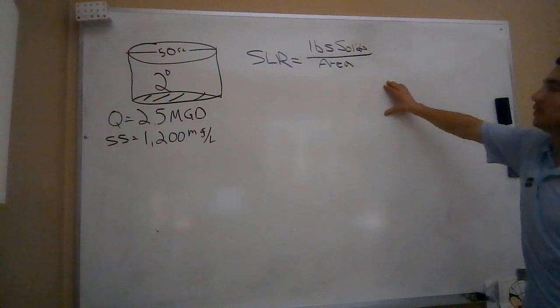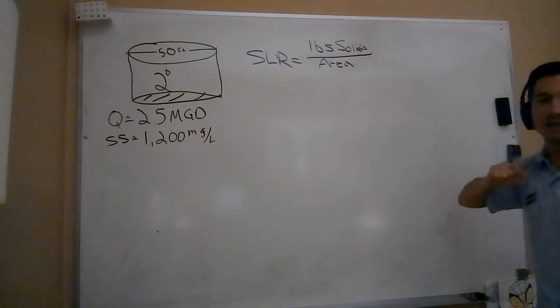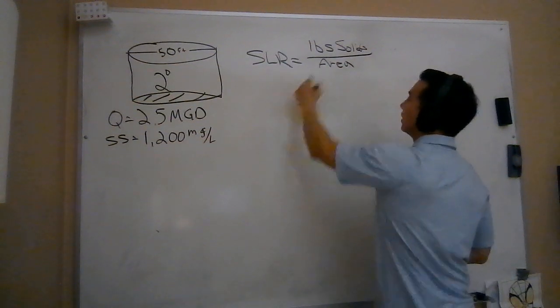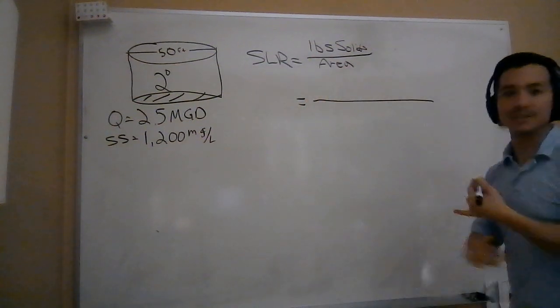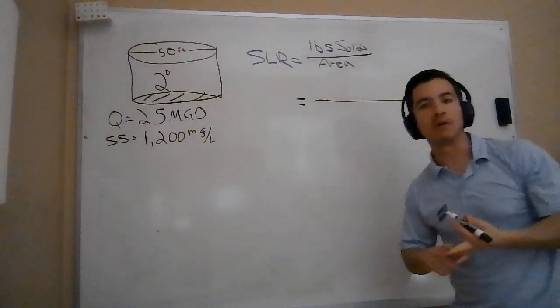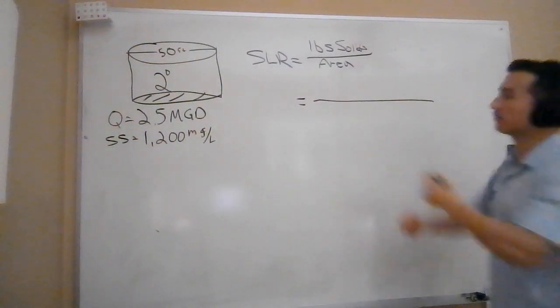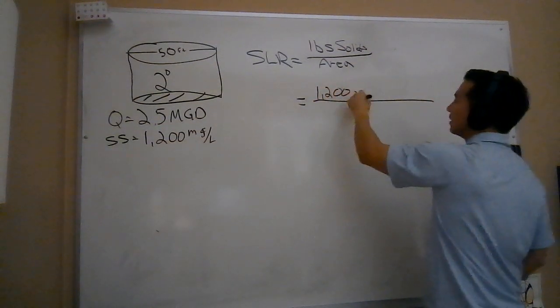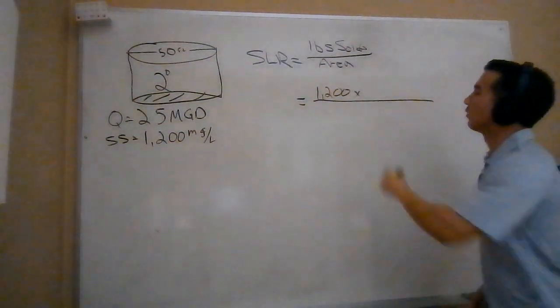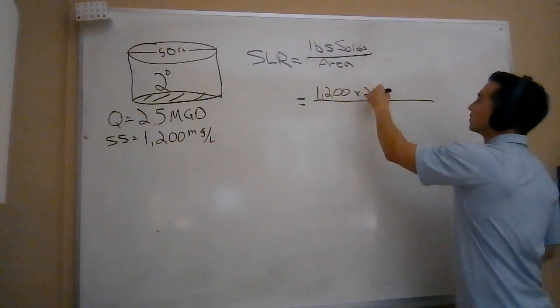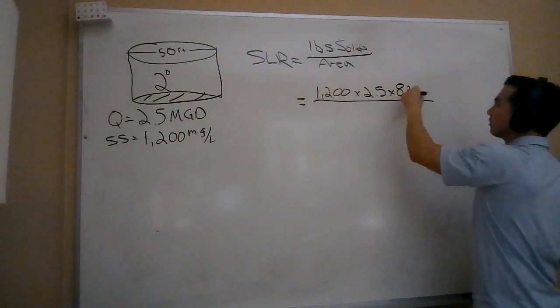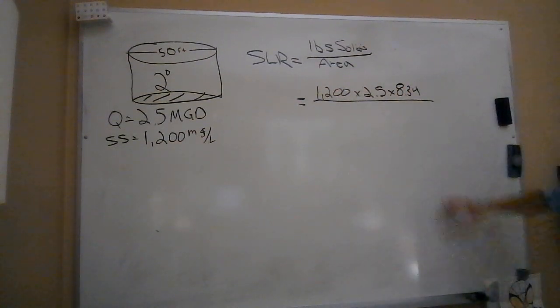When we see pounds formula, we should be thinking pounds formula right away. What do we need? We need our concentration, our volume, and our weight of water. The concentration of our solids is 1200, times my volume or flow of 2.5 million gallons per day, times the weight of water which is 8.34 pounds per gallon. This is going to get me to pounds of solids.